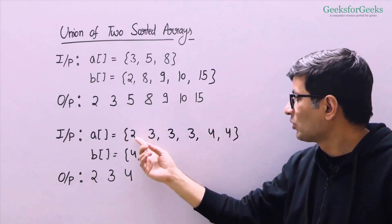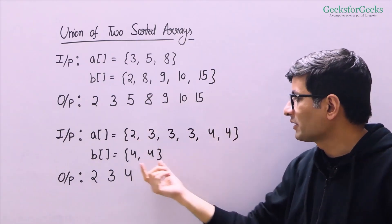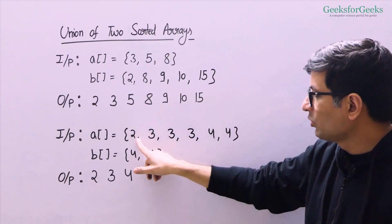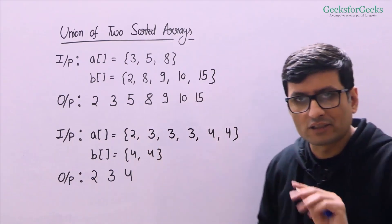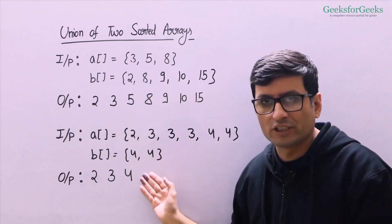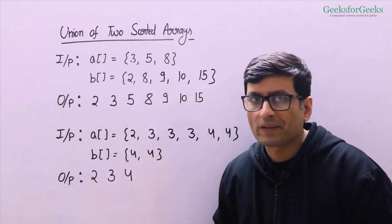Let us see this example: 2 then 3 three times, then 4 two times here. So 2, 3, 4 — these are the three distinct elements present in both the arrays, so our output is 2, 3, 4.